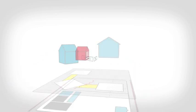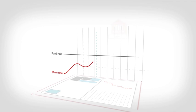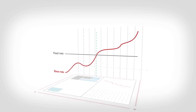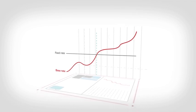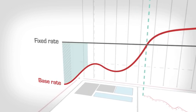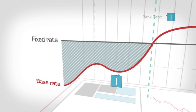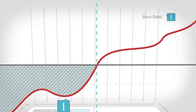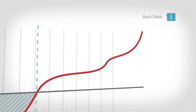Let's look at the possible outcomes. Over a charging period, if the average base rate is below the agreed fixed rate, the bank will debit you the difference. If the average base rate for a charging period is higher than the fixed rate, then the bank will credit you the difference.